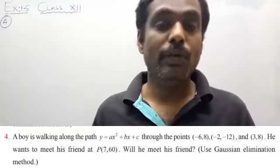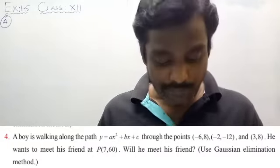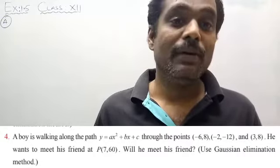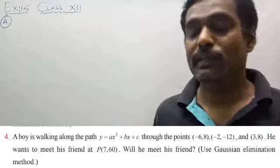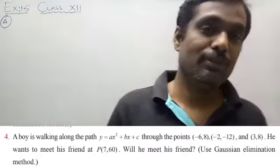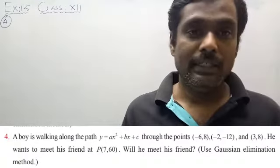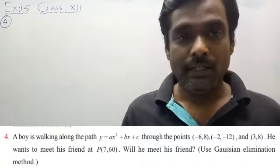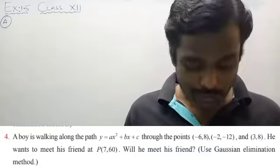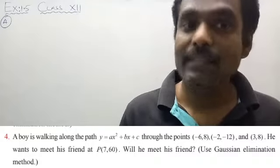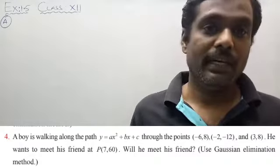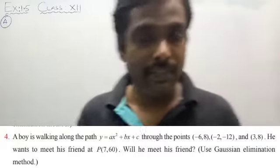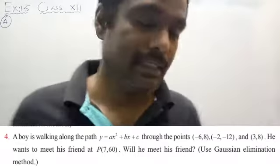But in this case, you want to verify whether he will meet his friend, who is at the point (7, 60). After getting the values of a, b, c, when you substitute in the equation, you will get y in terms of a quadratic. When you substitute this point, whether it satisfies — he will meet his friend. Otherwise, it is not possible. Very simple. Let us see the problem.